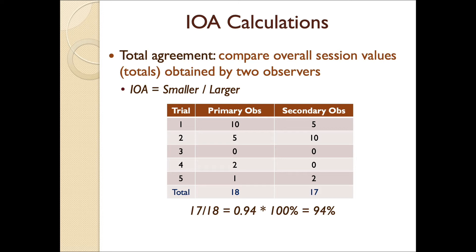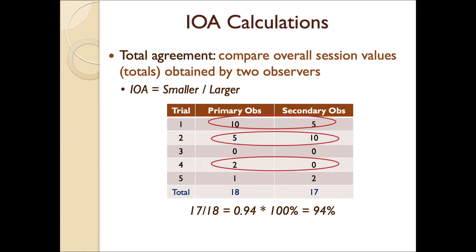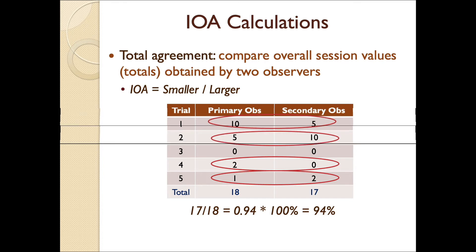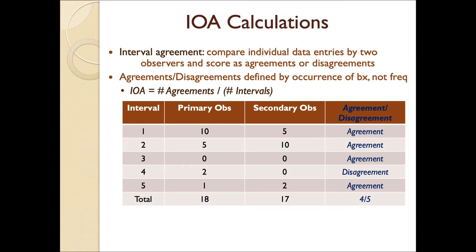The flaw with this system, when applied to count or frequency data, is that you can see there are discrepancies — pretty significant ones — trial to trial. Here there's a discrepancy of five responses; again five; two; and even though this is low, one person scored behavior occurred twice where the other person didn't see it at all. If we applied total agreement to partial interval data, where we're just interested in whether the response occurred versus not occurred, total agreement would be fine. It's typically reserved for that type of data collection — yes versus no, did the response occur, or correct versus incorrect.